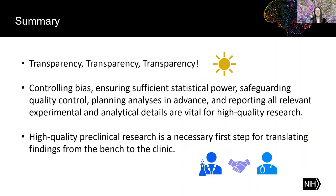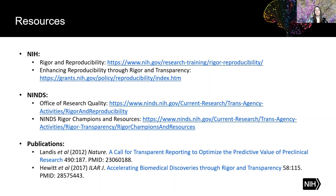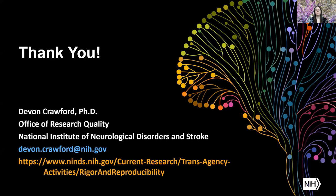High quality preclinical research is a necessary first step for translating findings from the bench to the clinic. On this slide, I've added some resources that might be of interest to you — you can pause the video if you'd like to look up any of these websites or papers. We have rigor and reproducibility resources from NIH, the website of our office at NINDS, and a page with a list of over a hundred resources related to rigor. I've also listed publications where you can learn more about rigorous experimental design elements. I'd like to thank you for your time — I hope this presentation was helpful and my contact information is here if you have any questions.